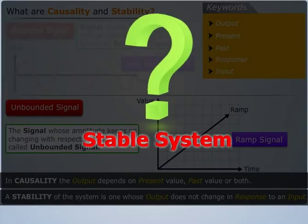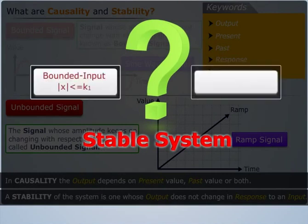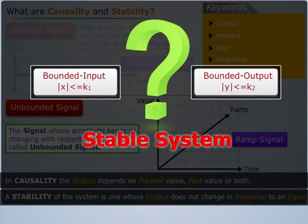Now what is stable system? A system is said to be stable if it is bounded input. Also the corresponding output is bounded where k1 and k2 are finite real numbers.